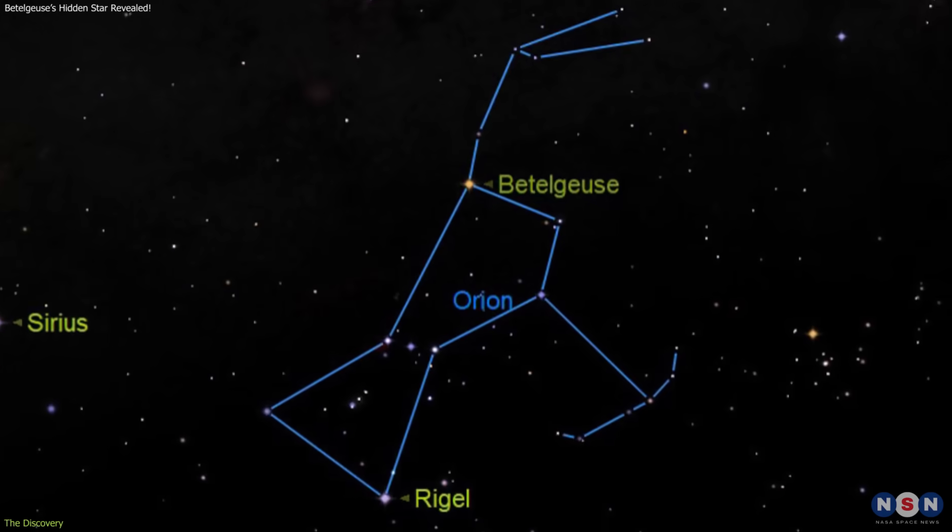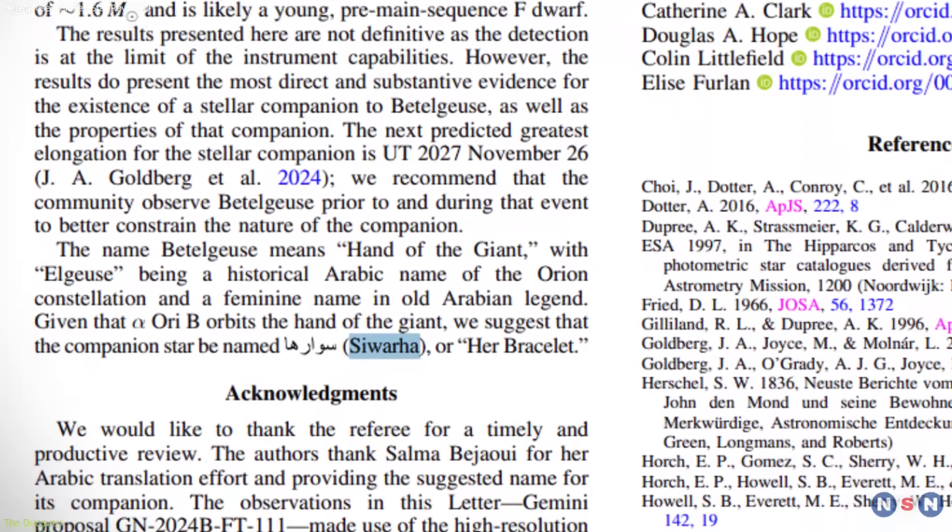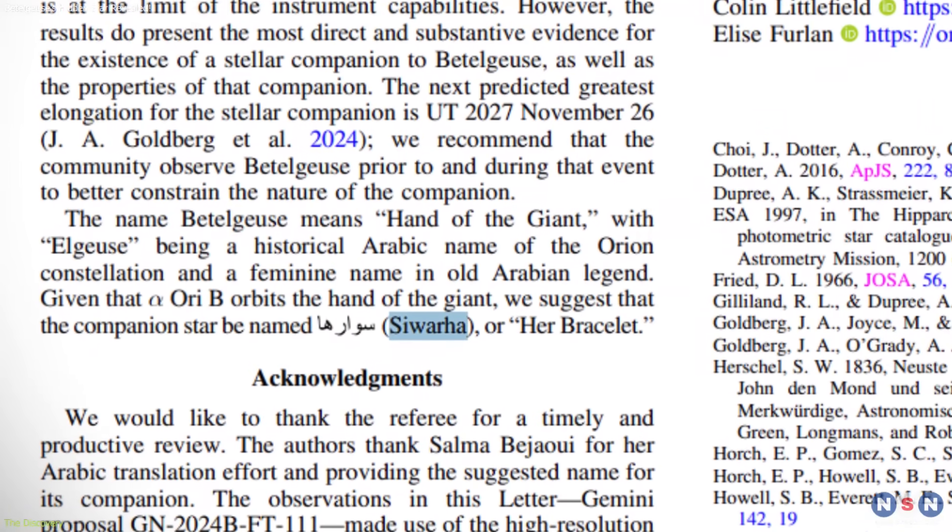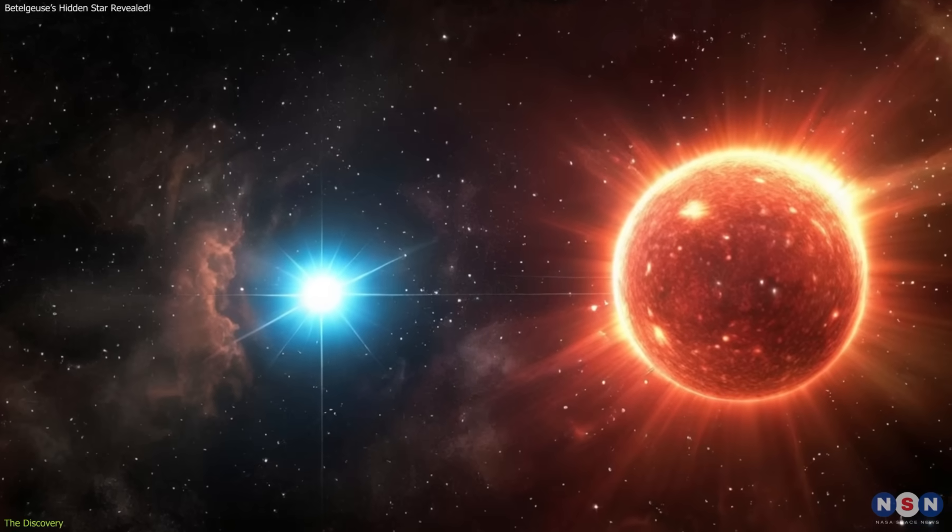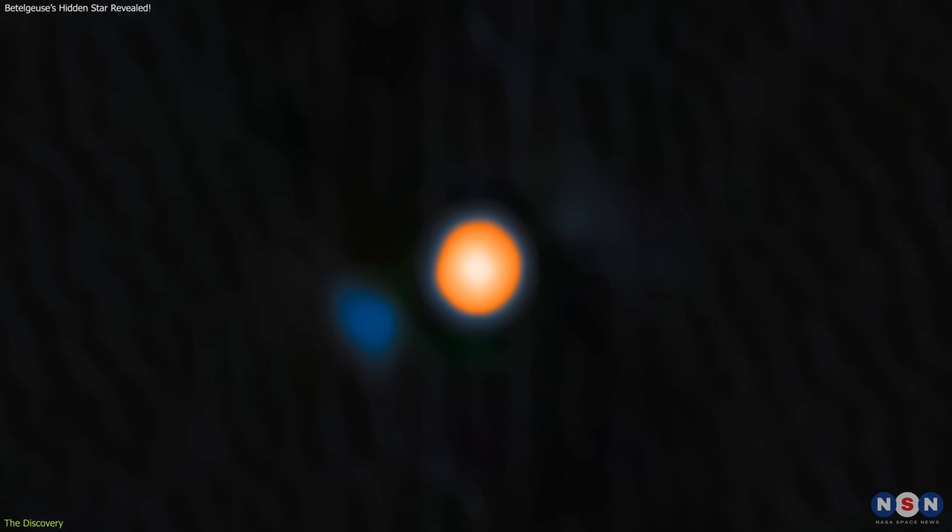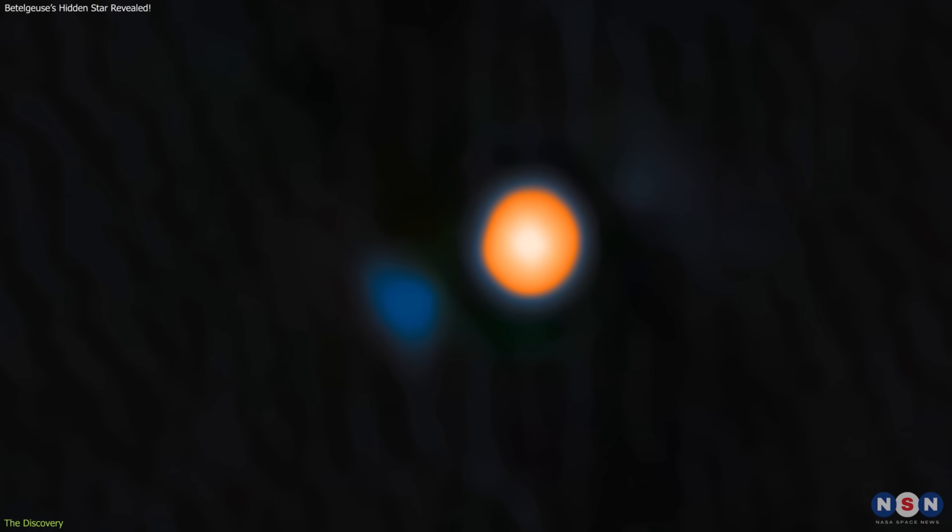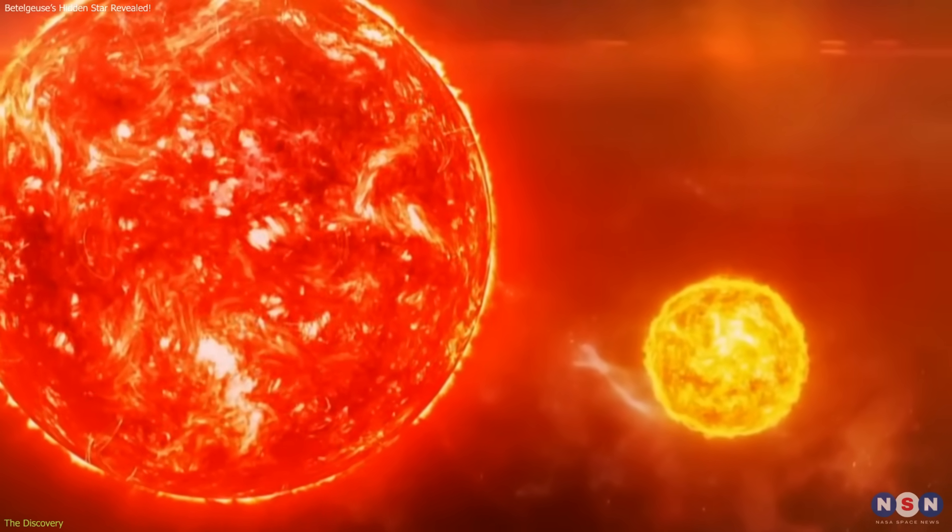To reflect its place in the story of Orion, the team proposed a nickname, Siwarha, meaning her bracelet in Arabic. Betelgeuse itself has an Arabic-rooted name, and the suggestion connects the discovery with the long cultural history of this famous star. While not official, the name captures the sense of a hidden adornment circling one of the sky's most recognizable giants.